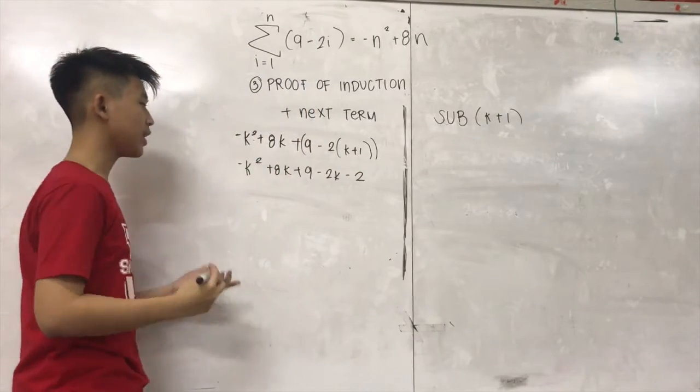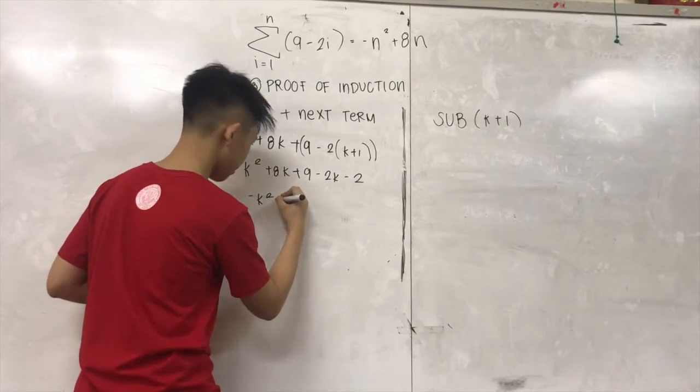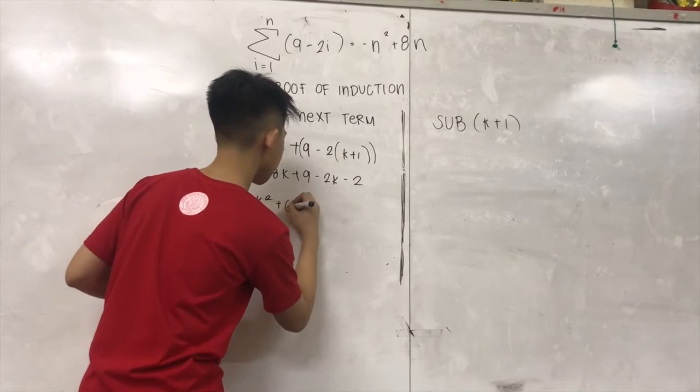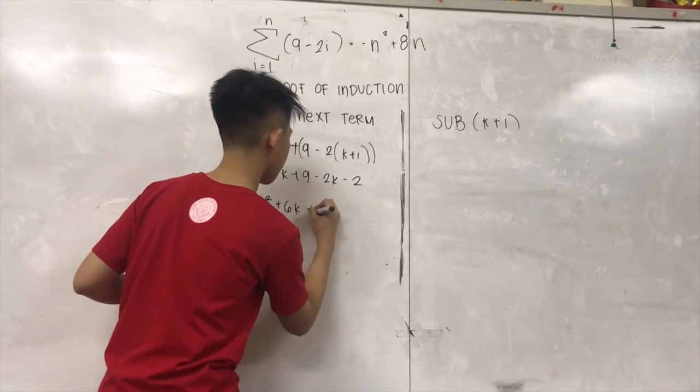We will just simplify the like terms. Negative K squared plus 6K plus 7.